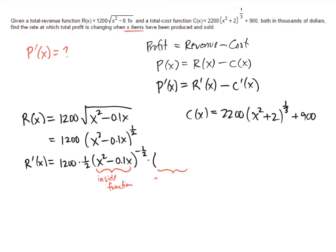And so what's going to go here is the derivative of x squared minus 0.1x. And that's just going to be 2x minus 0.1. So that's my formula for r prime.